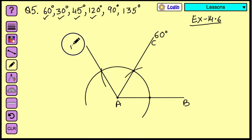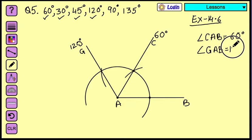This is your 120. Let's name it as G over here. So when we write it down about the angles, you can write angle C, A, B is 60 degree. And angle G, A, B is your 120 degree.